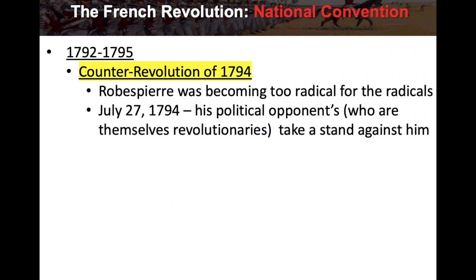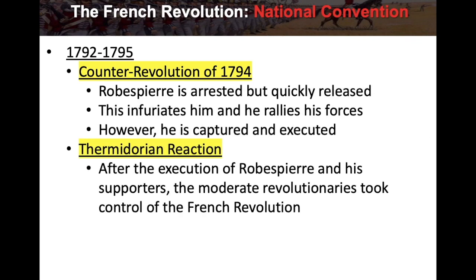Continuing 1792 to 1795, we have the counter-revolution of 1794. Robespierre was becoming too radical even for the radicals. On July 27th, 1794, his political opponents — who were revolutionaries themselves — took a stand against him. Robespierre was arrested, released, then tried to rally his forces against those rising up against him. However, he was captured and executed.